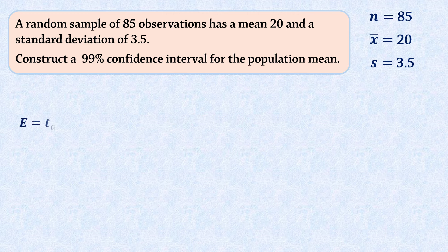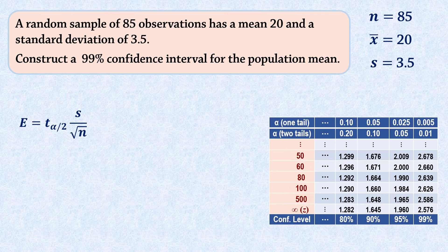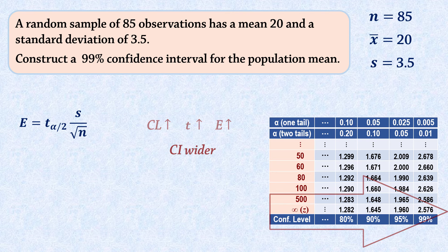In general, since sample size is in the denominator of the margin of error formula, increasing the sample size alone will decrease the margin of error and consequently make the confidence interval narrower. On the other hand, reducing the sample size will increase the margin of error and make the interval wider. In contrast, a higher confidence level will produce a larger critical value, resulting in a larger margin of error and thus a wider confidence interval.